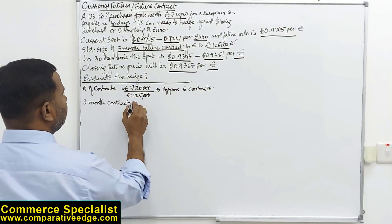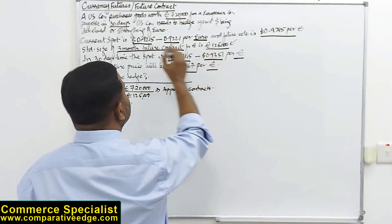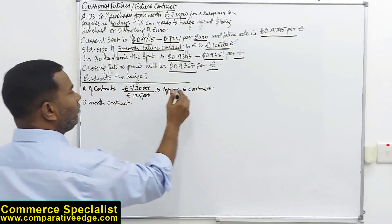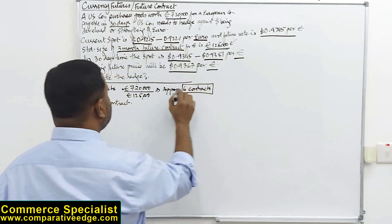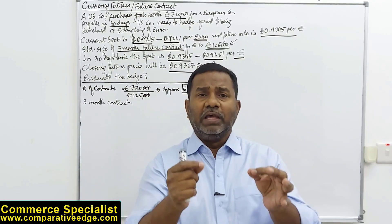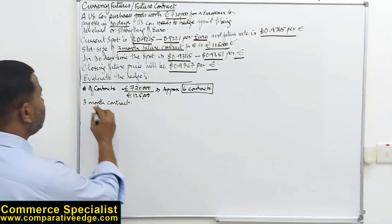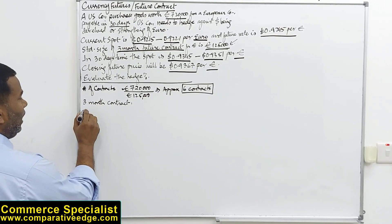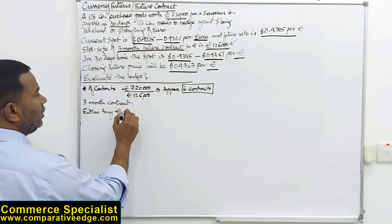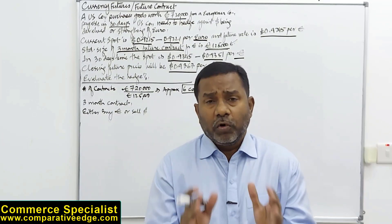We use a three-month futures contract because, although we have to pay in 30 days, the contract available is a three-month futures contract. So 720,000 divided by 125,000 gives us six contracts, each three months in period. We are buying euros because we have to pay after 30 days, and to buy euros we spend dollars. The type of contract is: sell dollars so we can buy euros.